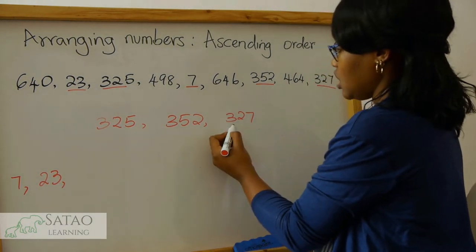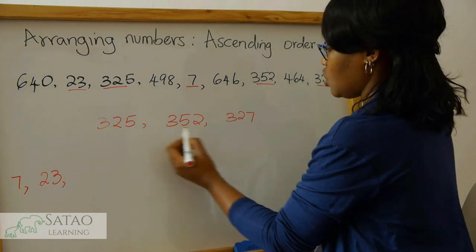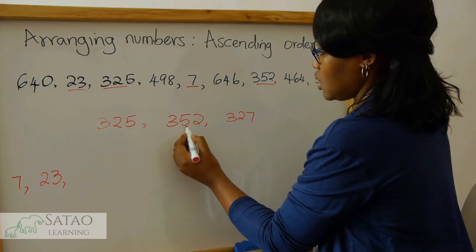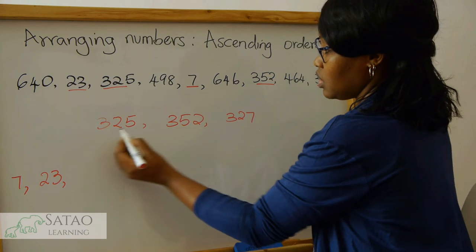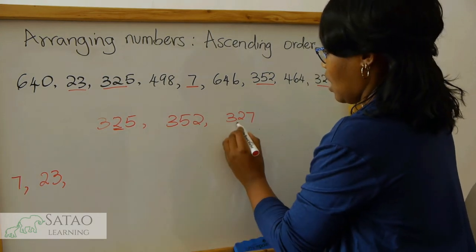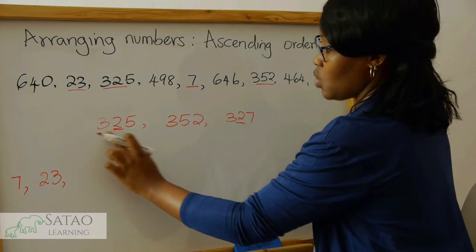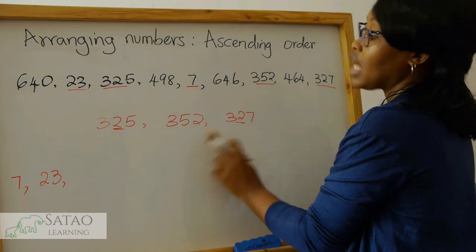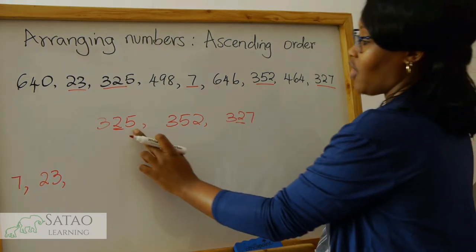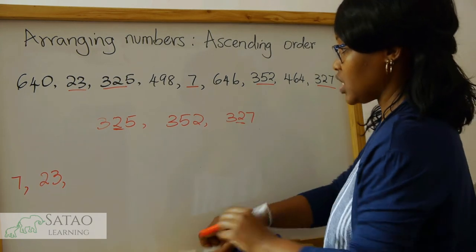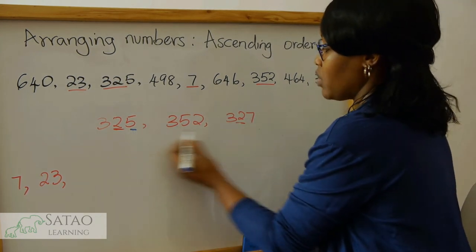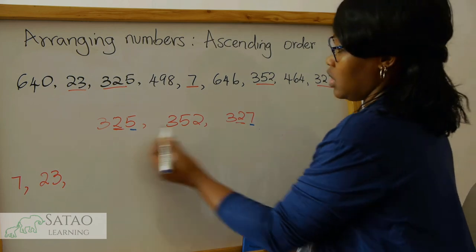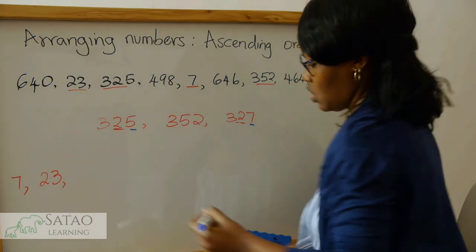We look at the first digit — they all begin with three, so we now look at the second digit. Because the first two digits of this number and the first two digits of this one are the same, we now look at the third digit, which is five and seven. Between five and seven, which one is smaller? Remember, we are doing them in ascending order, meaning we write the small one first. In this case, five is smaller, so we write it down.